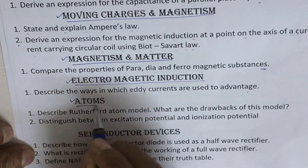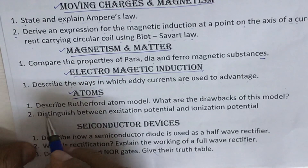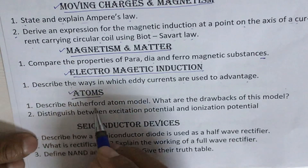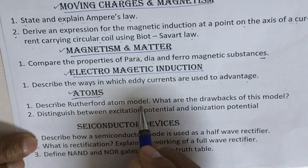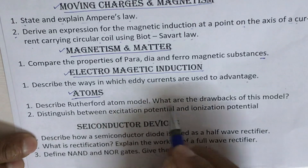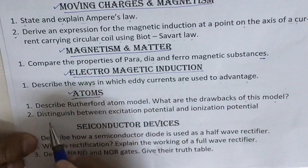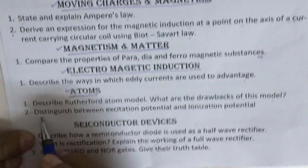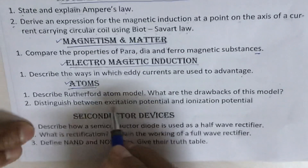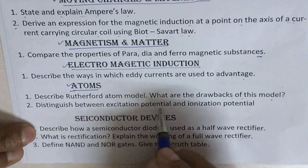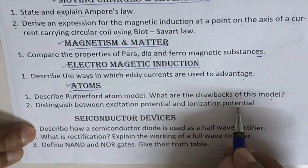The next topic is Atoms. The questions are: first, describe the Rutherford atom model — what are the drawbacks of this model? Second question: distinguish between excitation potential and ionization potential.